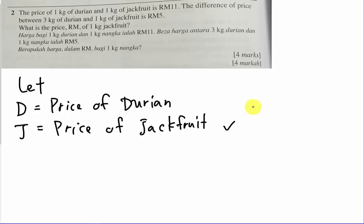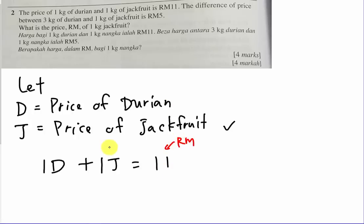I will form the first equation first. 1 kg of durian is 1D, plus 1 kg of jackfruit, which is 1J, equals RM11. So I write: D + J = 11. The 11 means ringgit, the 1 here means 1 kg. So if the price of durian is, say, RM5, then 1 kg of durian costs 1 times 5. If I change to 3 kg, it's 3 times 5. This is how the equation works.